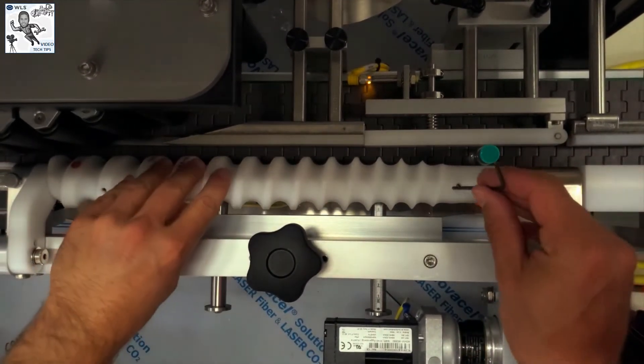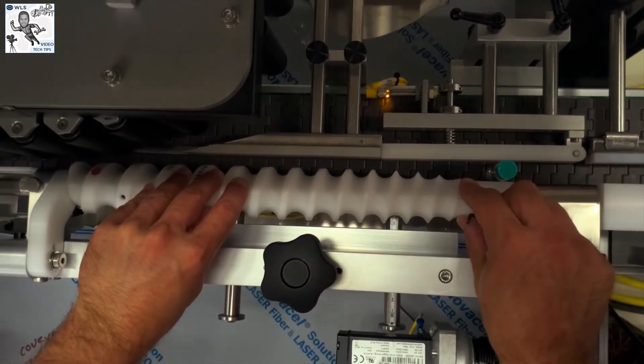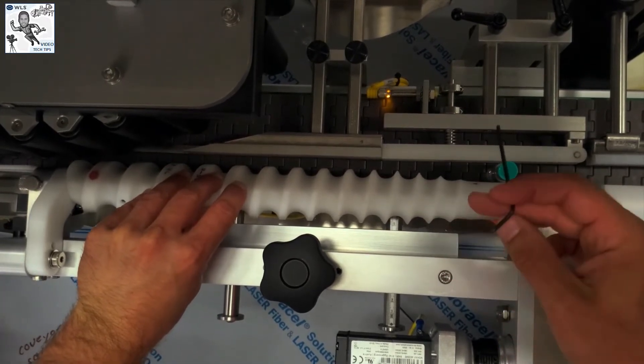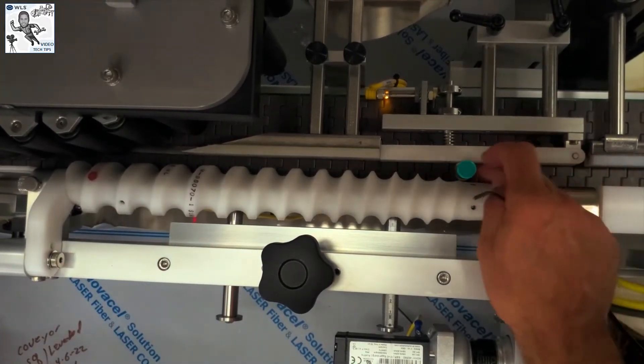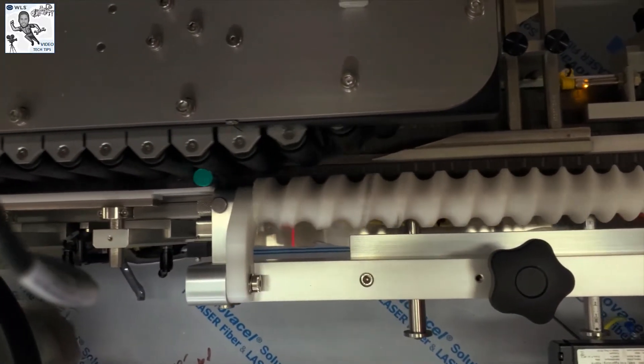On the feed screw, there are two set screws. Carefully back each one out so that you can adjust the feed screw backwards, in this case, as the trunnion roller is pulling the vial out of the feed screw. You do not have to back the screws completely out of the feed screw to make the adjustment.